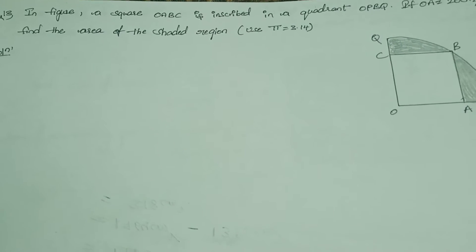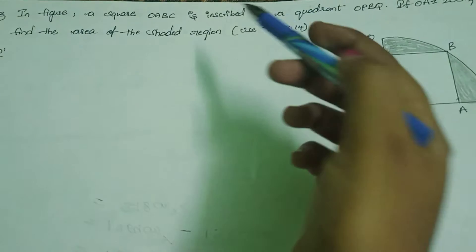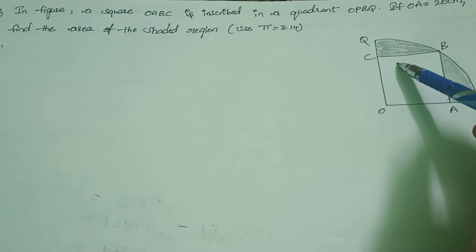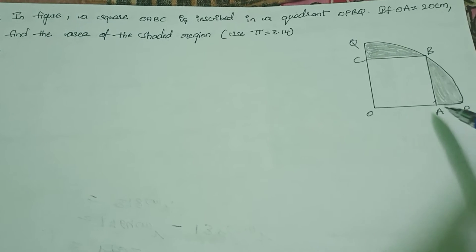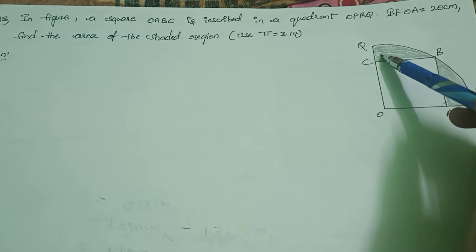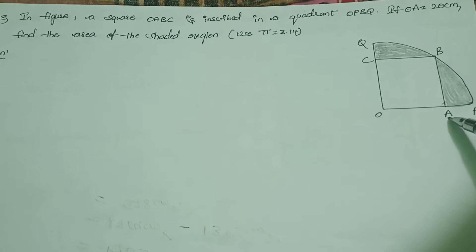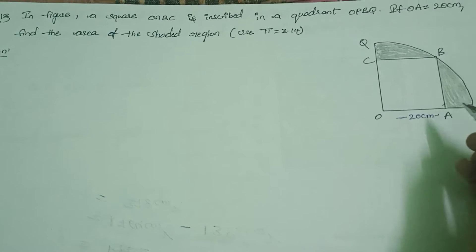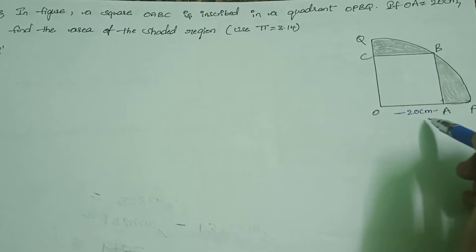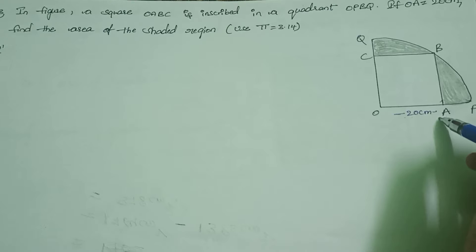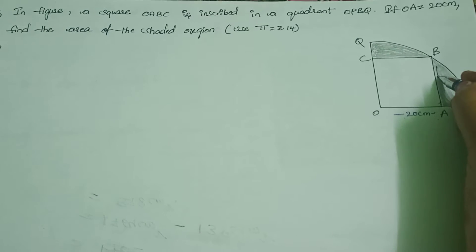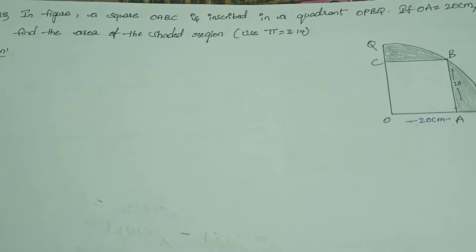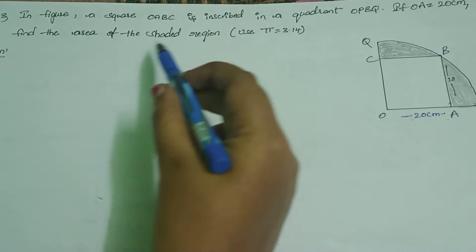Let's discuss question 13 in Exercise 12.3. In the figure, a square OABC is inscribed in a quadrant OPBQ. OA is given as 20 cm. We know that in a square all sides are equal, so OA = AB = BC = OC = 20 cm. Find the area of the shaded region.